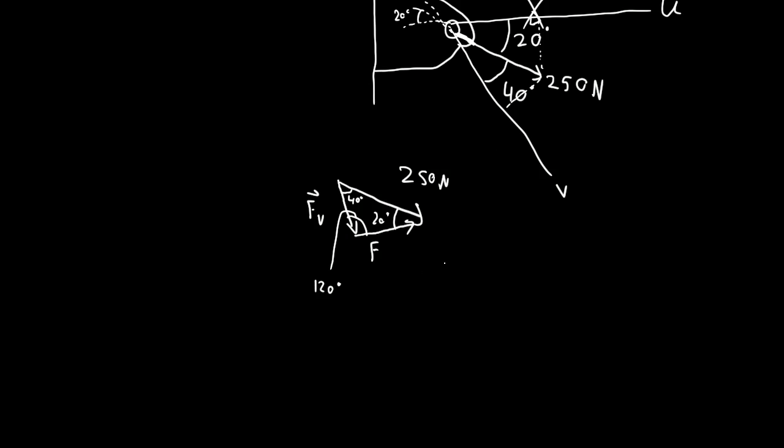So we have this 120, so we'll do 250 Newtons over sine 120 equals FV over sine 20. And this implies FV equals 250 sine 20 divided by sine of 120 degrees.